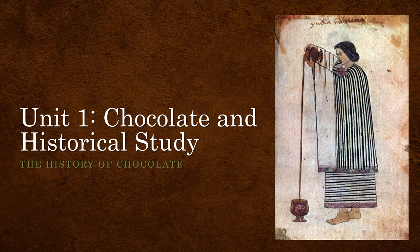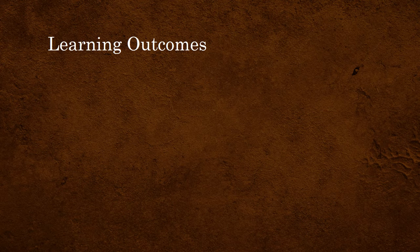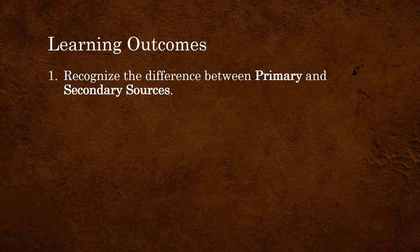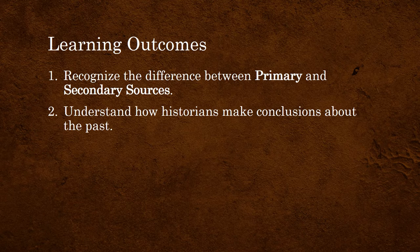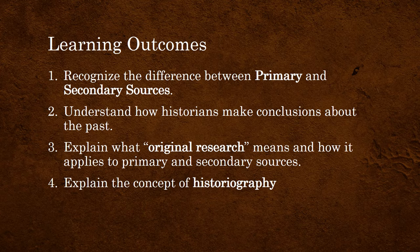In this unit we're going to look at chocolate and historical study. The learning outcomes for this unit are: number one, recognize the difference between primary and secondary sources; number two, understand how historians make conclusions about the past; number three, explain what original research means and how it applies to primary and secondary sources; and number four, explain the concept of historiography.